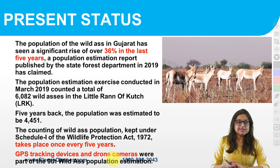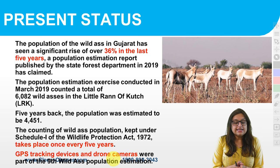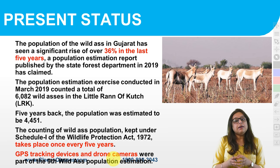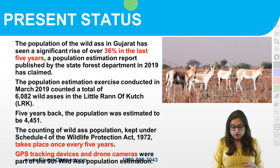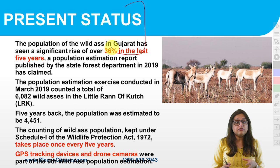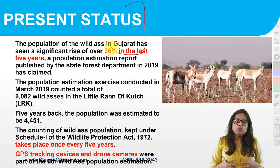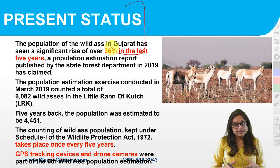The numbers in the Little Rann of Kutch Indian Wild Ass Sanctuary are good and there is protection too. The numbers have actually increased — showing an increase of 30% in the last 5 years, which is a very good increase.